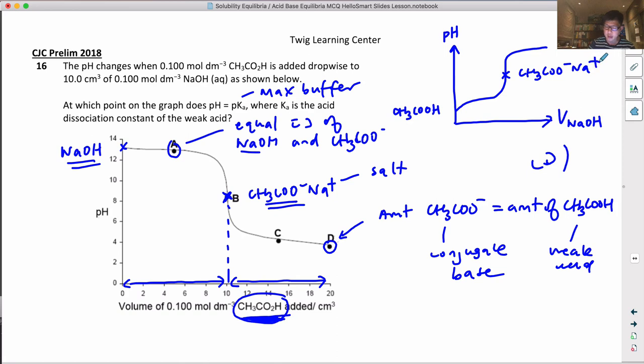At this point all the ethanoic acid will have been neutralized to form CH3COO- and Na+. So if you started with the weak acid in a conical flask, you end up over here right smack in the middle.